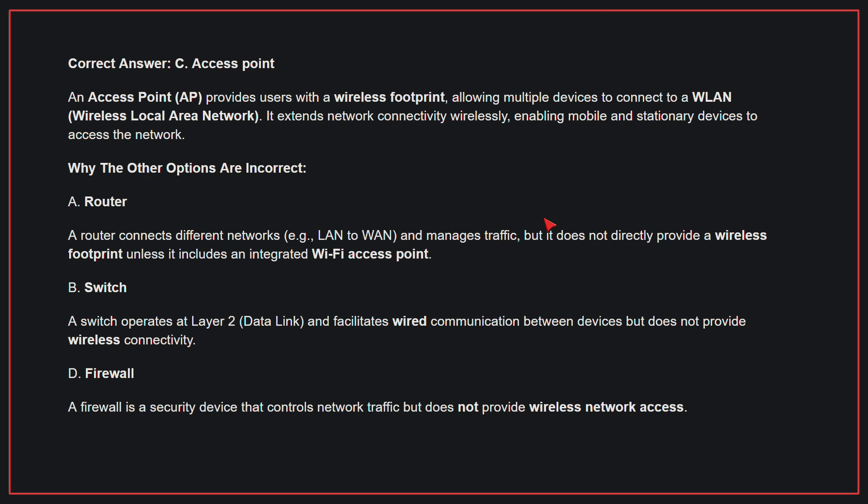Why the other options are incorrect? A, Router: A router connects different networks and manages traffic, but it does not directly provide a wireless footprint unless it includes an integrated Wi-Fi access point. B, Switch: A switch operates at layer 2 and facilitates wired communication between devices, but does not provide wireless connectivity. D, Firewall: A firewall is a security device that controls network traffic, but does not provide wireless network access. Therefore, the correct answer is C, Access point.